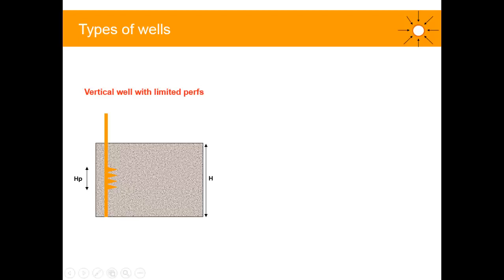When we mention a vertical well with limited perforation, we assume a vertical well that has been fully drilled across the reservoir section but with only some limited perforation of height HP. We may have perforated only a limited section on purpose for production efficiency — for example, if we have an aquifer, we might want to avoid or delay water breakthrough, or in the case of a gas cap, delay gas breakthrough.